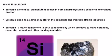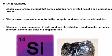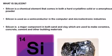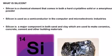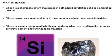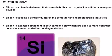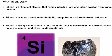What is silicon? Silicon is a chemical element that comes in both a hard crystalline solid or an amorphous powder. Silicon is used as a semiconductor in the computer and microelectronic industries. Silicon is a major component in both sand and clay which are used to make ceramics, concrete, cement, and other building materials.